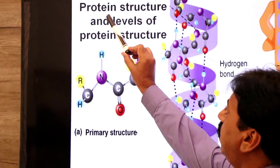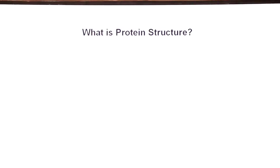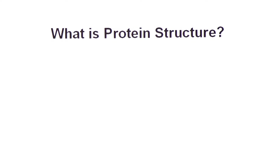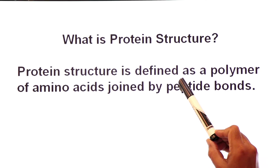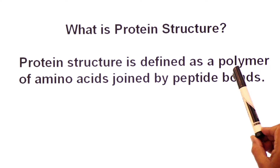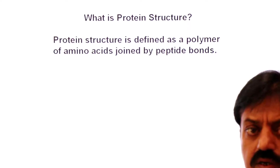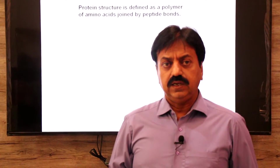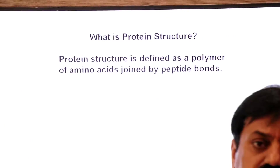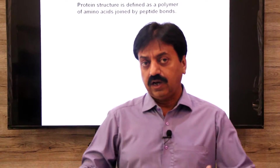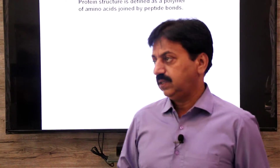Let's first define what is protein structure. Protein structure is defined as a polymer of amino acids joined by peptide bonds. A polymer of amino acids is called a polypeptide chain, and the bonds formed in it are called peptide bonds.